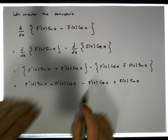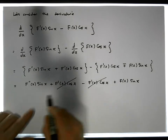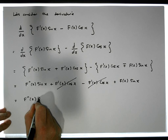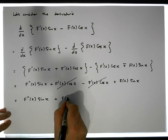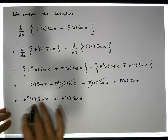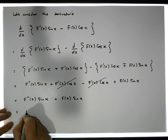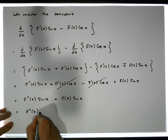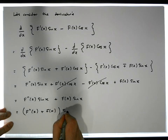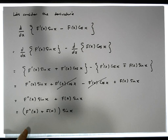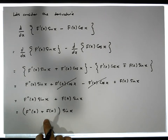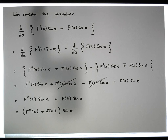You can see that the F prime of x cosine of x terms cancel out. We're left with F double prime of x sine of x plus F of x sine of x, and the common factor sine of x gives us F double prime of x plus F of x, all times sine of x. We've already shown this result in a previous step.